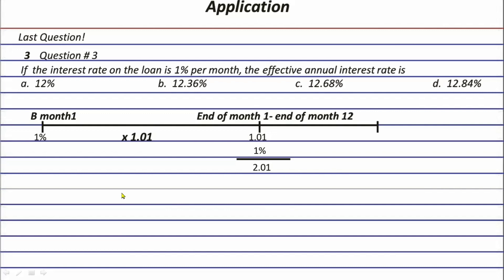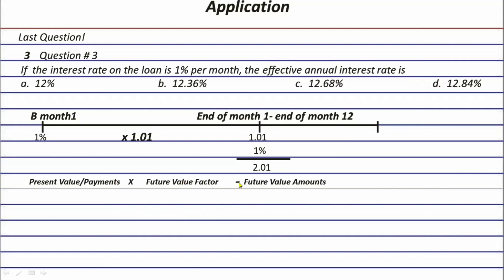Let's solve using: present value payments times the future value factor equals the future value. The present value amount is one percent (or 0.01), and since one percent occurs per month — multiple times — we use the future value ordinary annuity formula: ((1 + i)^n − 1) / i. Here that gives us: ((1.01)^12 − 1) / 0.01.